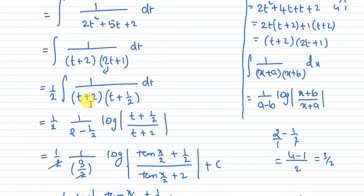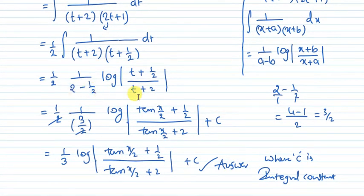Here a is 2 and b is 1 by 2. So 1 by 2 times 1 by 2 minus 1 by 2 log mod of t plus half divided by t plus 2. Taking LCM, 2 minus 1 by 2 gives 4 minus 1, which is 3 by 2.